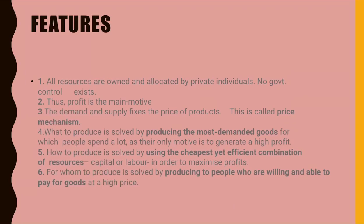There are three economic questions asked. First, what to produce — solved by producing the most demanded goods for which people spend a lot, as the only motive is to generate high profit. Second, how to produce — solved by using the cheapest yet efficient combination of resources, either capital or labor, to increase profits and achieve profit maximization.